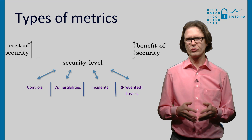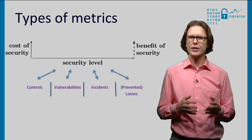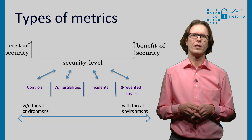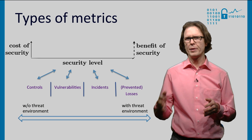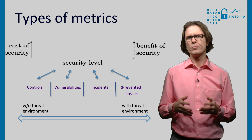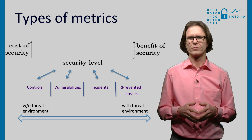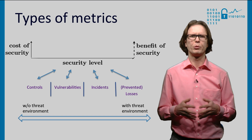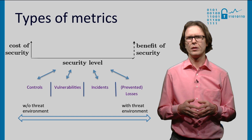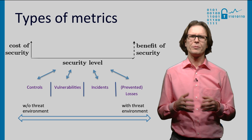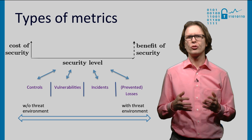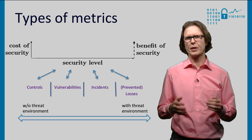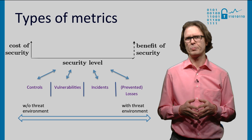Metrics based on controls, on vulnerabilities, on incidents, and on prevented losses. En route from cost to benefit, we bring in more and more of the threat environment. Controls are closest to the cost. They are the measures that are put in place to mitigate risk. These metrics do not look at how the control actually functions vis-a-vis an attacker, but whether it's in place and whether it meets the specifications.